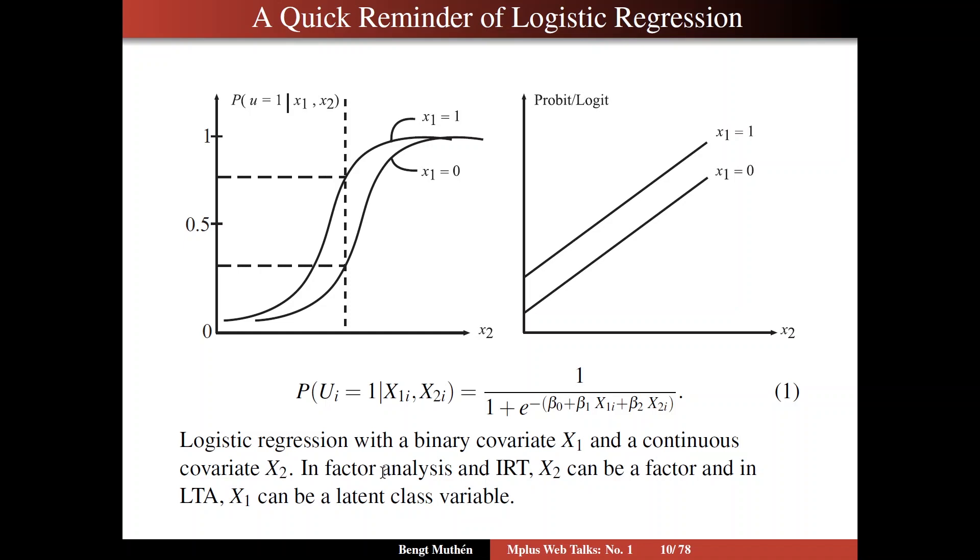Now, we're going to take a look, use this kind of formula in settings where the x's are unobserved. They're latent variables. In factor analysis and item response theory, we're going to work with x2 as a factor, as a continuous latent variable, and in LTA, we're going to work with x1 as a latent class variable. So in this case, a binary latent class variable. So it's a very general formula that we use.